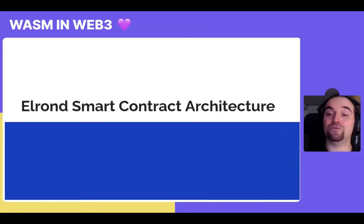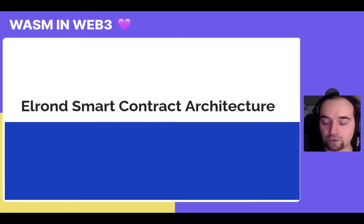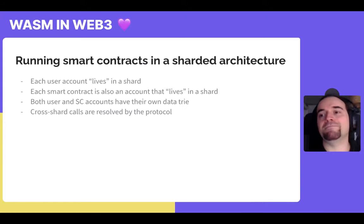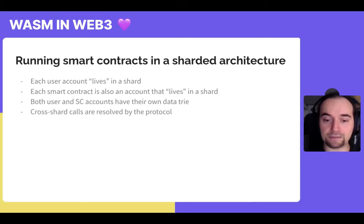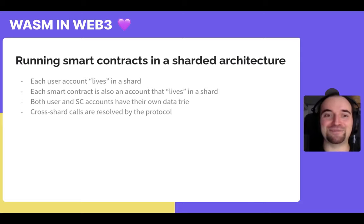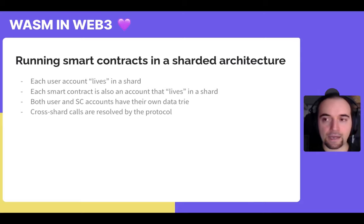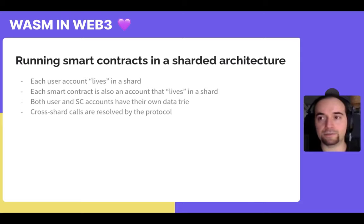Now I want to tell the story of how we came about to building our smart contract infrastructure. The first major challenge any sharded blockchain faces is: how do you run smart contracts in a sharded architecture? Because the state is completely separate — each shard has its separate state and separate transactions — contracts cannot communicate directly across shards, as that would contradict the entire concept of sharding. Each user account lives in a shard, each smart contract lives in a shard, and they all have their own data trees, relying on the protocol to resolve cross-shard calls.